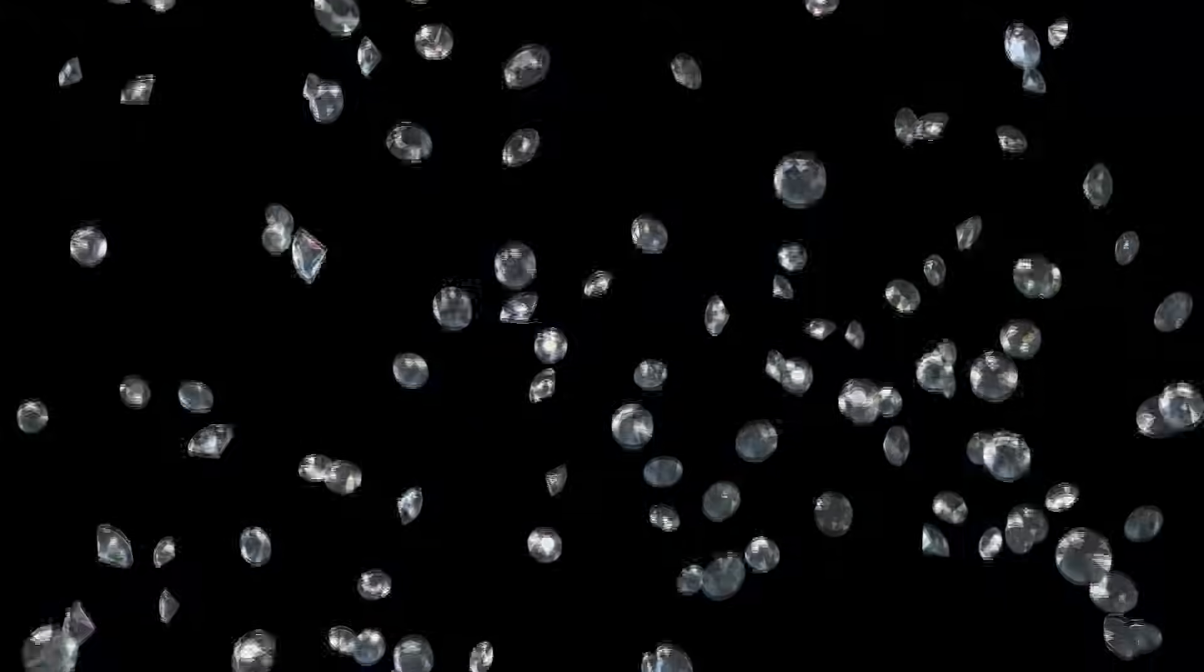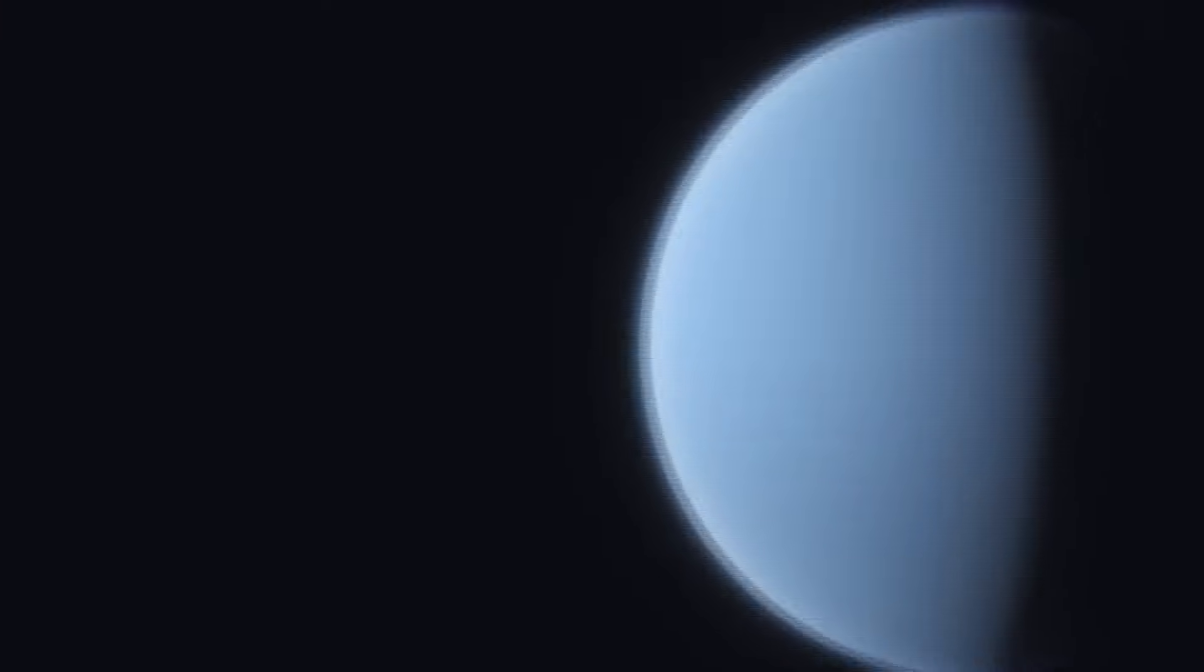But what's happening deep inside these planets is even more unbelievable. Forget water, it's raining solid diamonds. Deep inside Uranus and Neptune, thousands of miles below the cloud tops, the conditions are hellish. Pressures are millions of times greater than on Earth, and temperatures reach thousands of degrees.